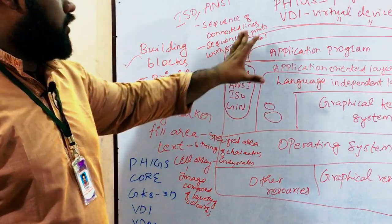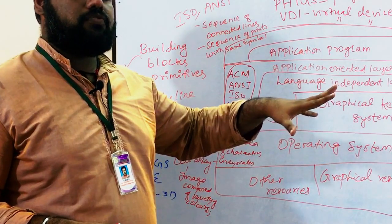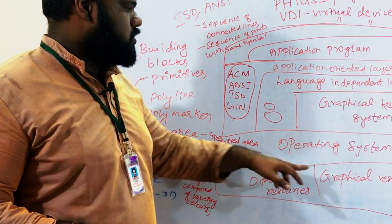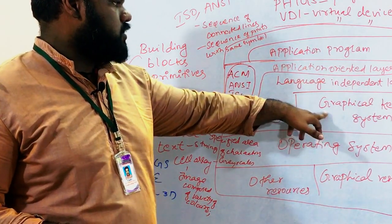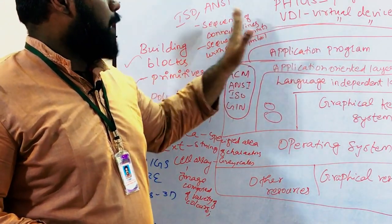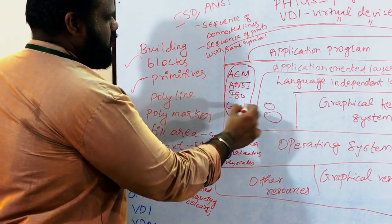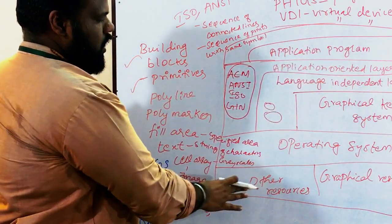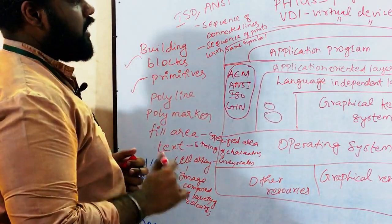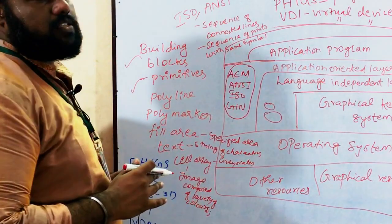This is the basic diagram of GKS. There are different layers: other resources, graphical resources, operating system, graphic kernel system, language-independent layer, application-oriented layer, and application program. This is the standard diagram of the Graphics Kernel System.